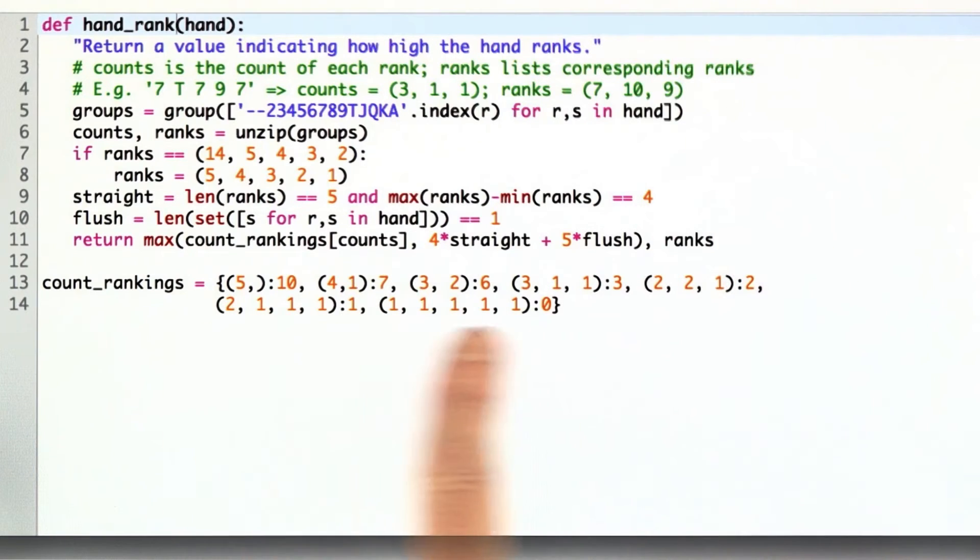What I did is I took all seven of the partitions of the numbers, of the number five, and put them into a table called count_rankings and then had the corresponding poker ranking, zero for a high card, one for a pair, two for two pair, and so on.